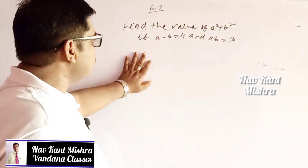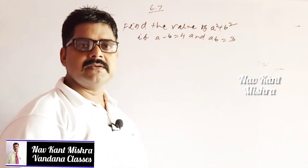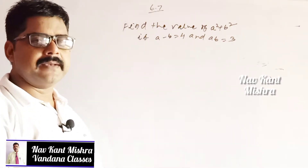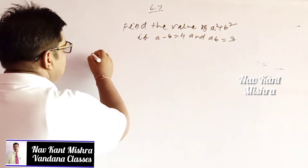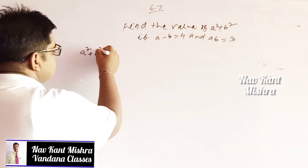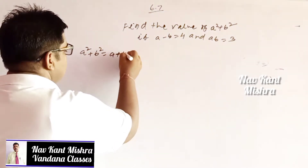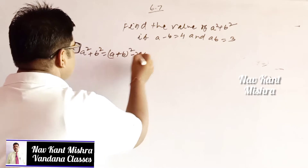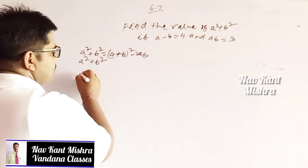In this question, my dear student, you need to find out the value of a square plus b square. Such type of question has been given in two types. The first type is based on this formula: a square plus b square is equal to a plus b whole square minus 2ab.